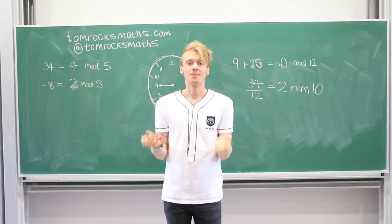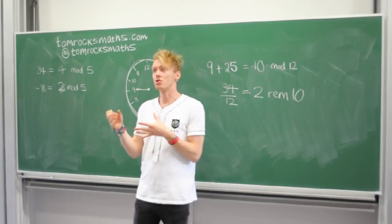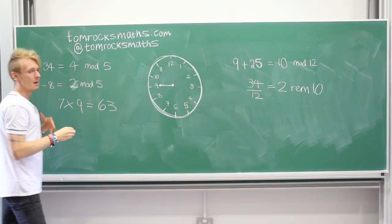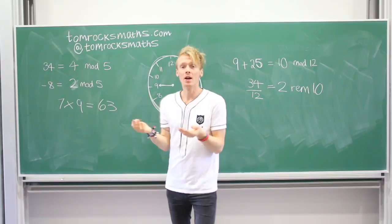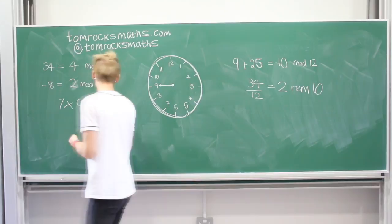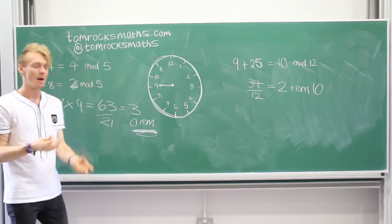Let's do one final example: 7 times 9, and we want to work out what 7 times 9 is modulo 21. First, just do 7 times 9 in the normal way — that's 63. Now, how many 21s go into 63? Well, 63 is exactly 3 lots of 21, so 63 divided by 21 is exactly 3 with 0 remainder. The fact that there's 0 remainder means the answer is simply 0 mod 21.